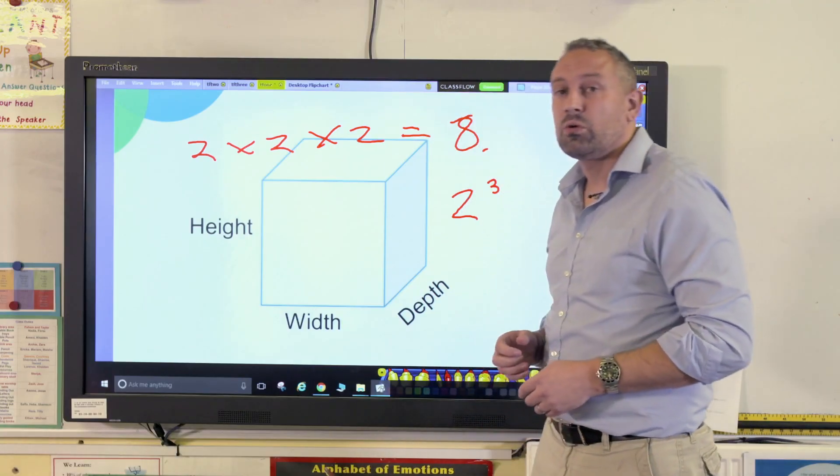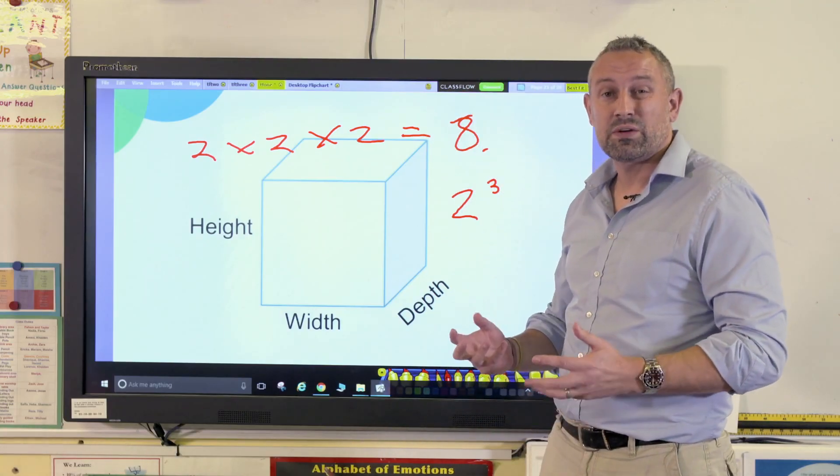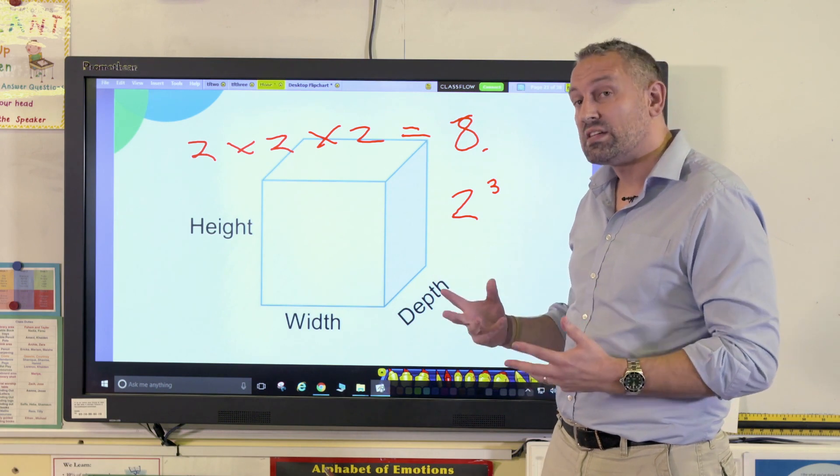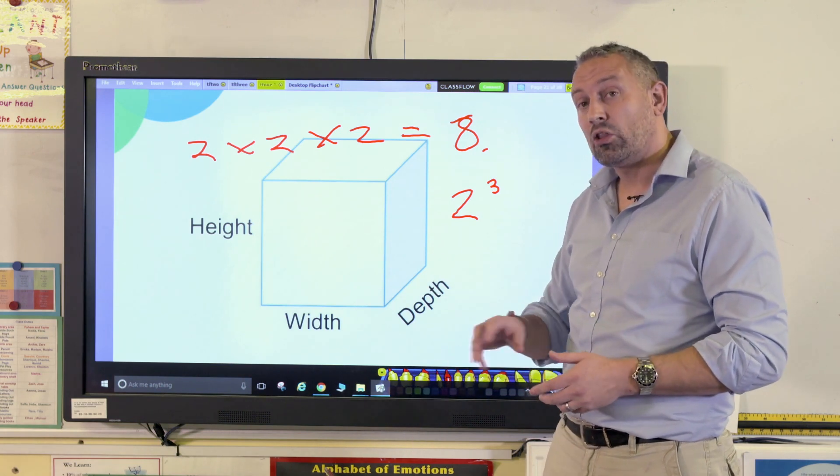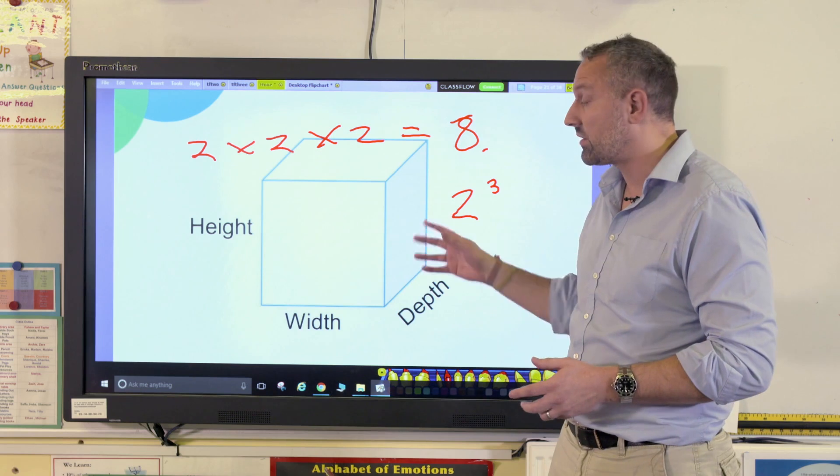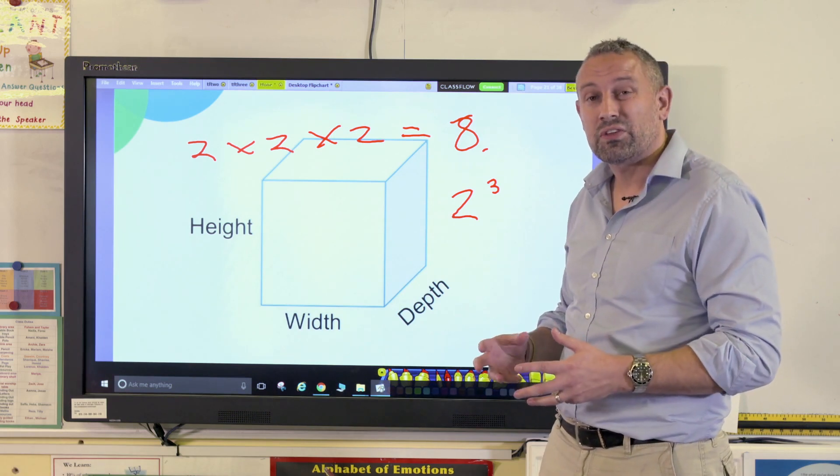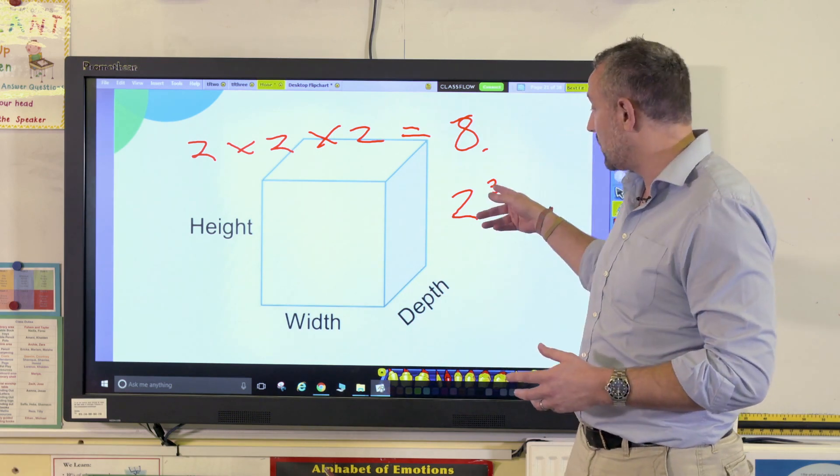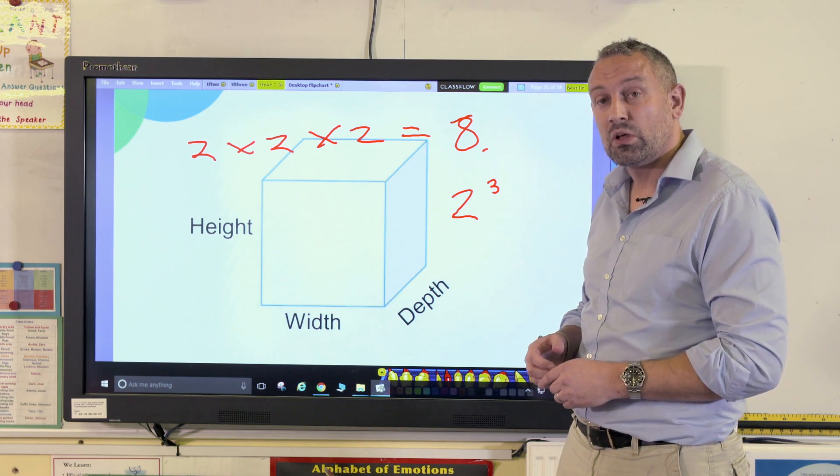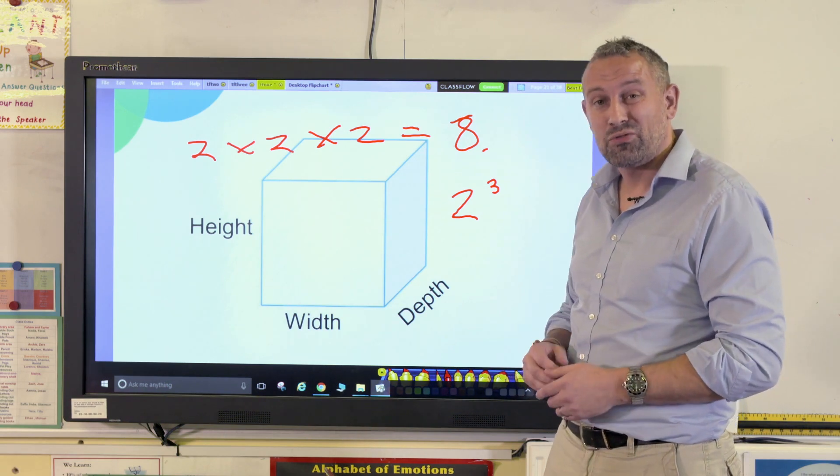From then on, I would get the children to explore with different cube numbers and different square numbers and see if they could write it down. So they've got the concrete, they've got the pictorial, and then they've got the abstract—they've got the numbers. If they understood that and they were able to write it down with the notation 3 for cubed or 2 for squared, that would really help them.